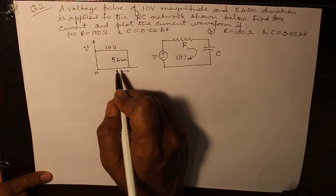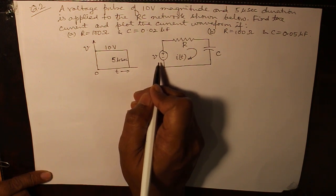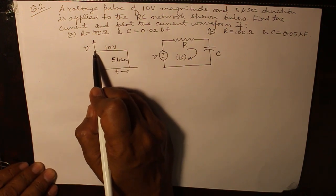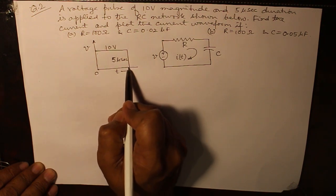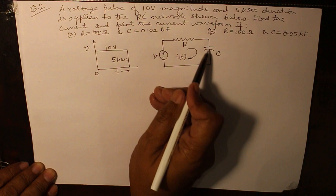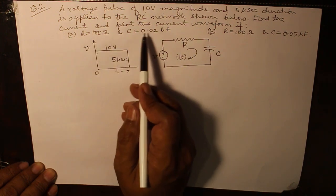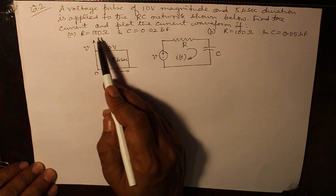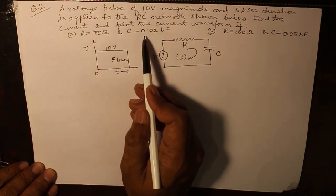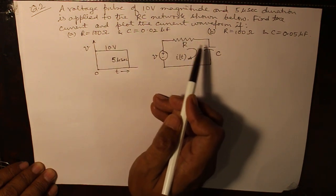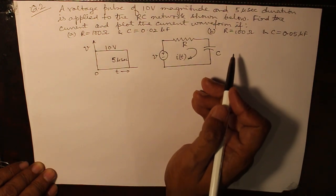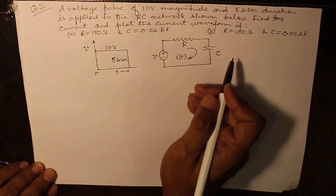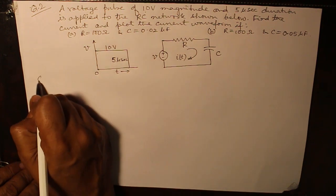When you have a different kind of waveform being impressed onto the RC circuit, here we find a voltage pulse of magnitude 10 volt and duration 5 microseconds is applied onto the RC network shown below. We are required to find out the current and also plot the current waveform when the values of R is 100 ohm in both cases and capacitor value 0.02 microfarad in the first case and in the second case 0.05 microfarad. Thereby, you can make an inference about the time constant and how the output is changing when the time constant changes. So, let's solve this question.